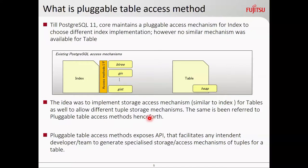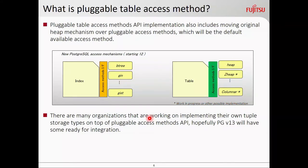It exposes APIs to facilitate any developer to make a new AM altogether. This is how the picture looks like now — table AM exposes a new interface. Right now by default it is only heap, but teams are working on Zheap. There is columnar storage as well — we all know Zstore, but it is not there yet and the name is not finalized. There are discussions around what it should be named, so that is why I've written just 'columnar'. Many organizations are working on implementing their own tuple storage on top of pluggable storage, and PG-13 will definitely see new implementations.